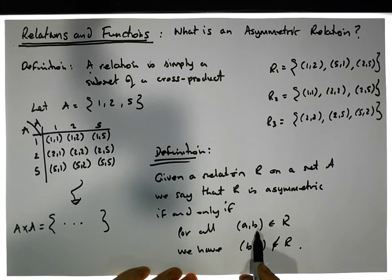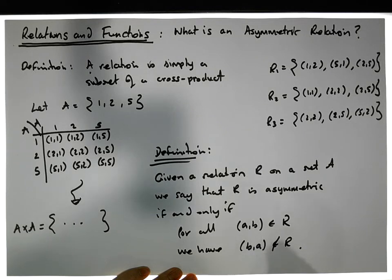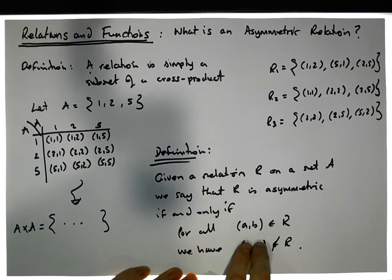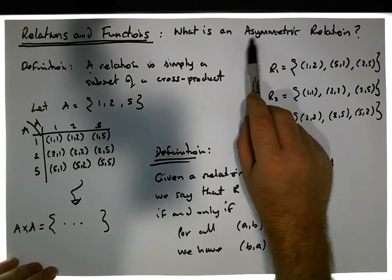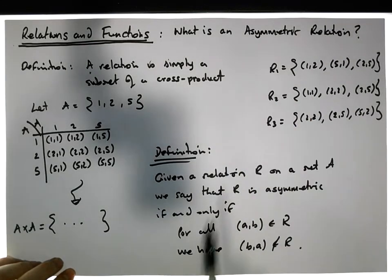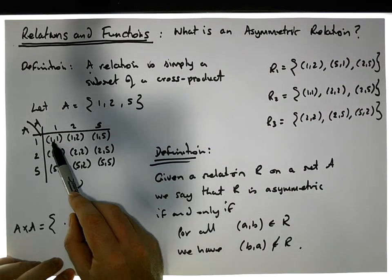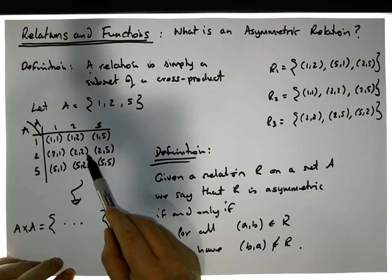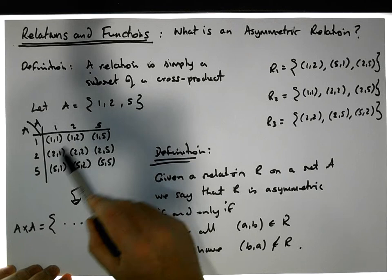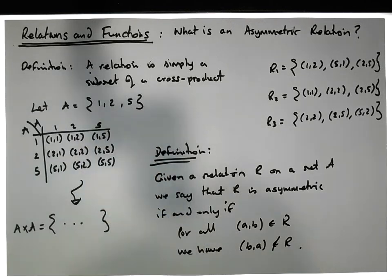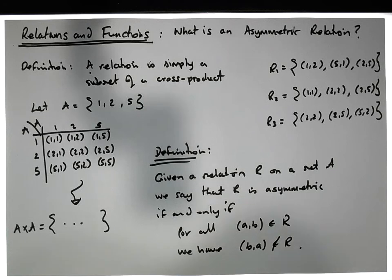It doesn't matter whether a equals b — if (a,a) is in the relation, then when you flip it you still get (a,a), which would also be in the set, violating the condition. So asymmetric relations cannot contain reflexive ordered pairs, and they also cannot contain the symmetric counterparts of any pairs within the set.